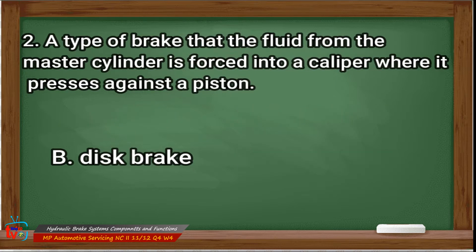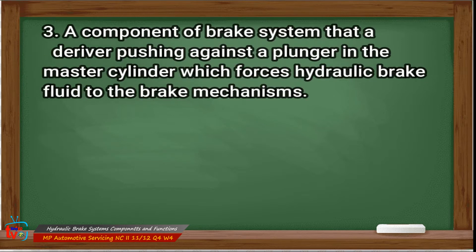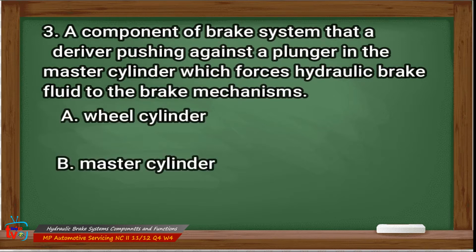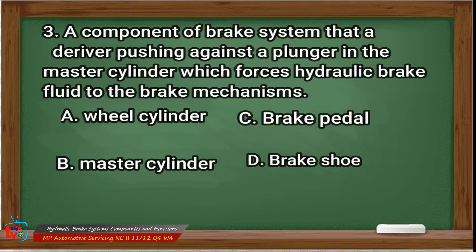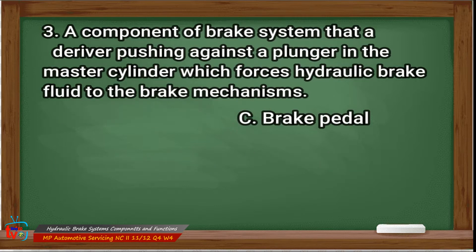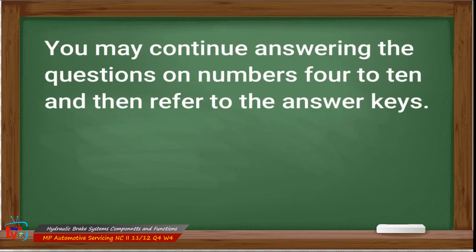Correct answer: letter B, disc brake. Number three: a component of the brake system that a driver pushes against — a plunger in the master cylinder which forces hydraulic brake fluid to the brake mechanism. A: wheel cylinder, B: master cylinder, C: brake pedal, D: brake shoe. Answer: letter C, brake pedal. You may continue answering the previous questions from numbers 4 to 10 and then refer to the answer keys.